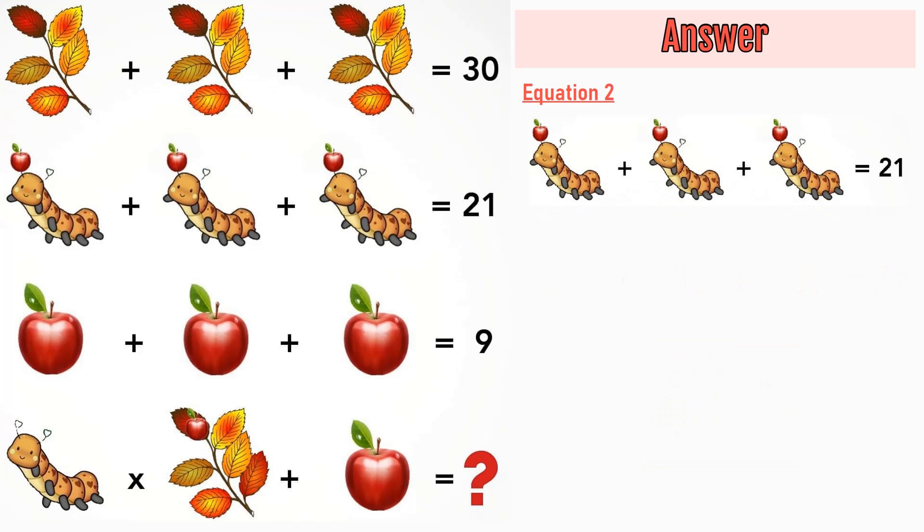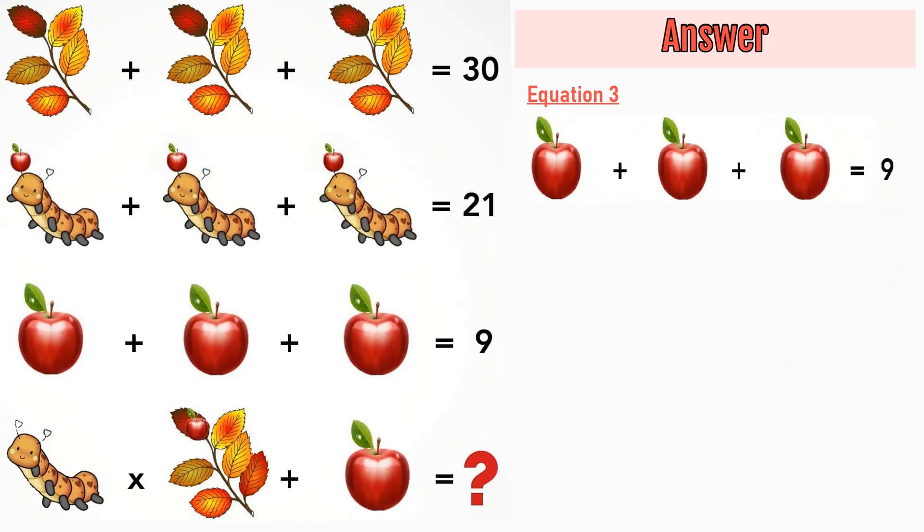Moving on to equation number 2, we have a caterpillar with an apple plus a caterpillar with an apple plus a caterpillar with an apple is equal to 21. 7 plus 7 plus 7 is equal to 21. A caterpillar with an apple is equal to 7.